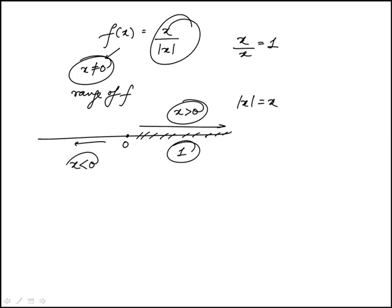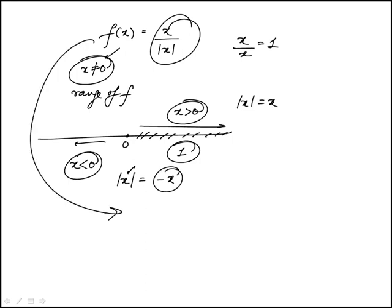Next consider x is less than 0. In that case, absolute value of x is minus x. Always remember that x itself is negative, so this number is still positive. So in this case, the function will be x over minus x or minus 1. So all of these values of x, negative values, would give us an output of minus 1.